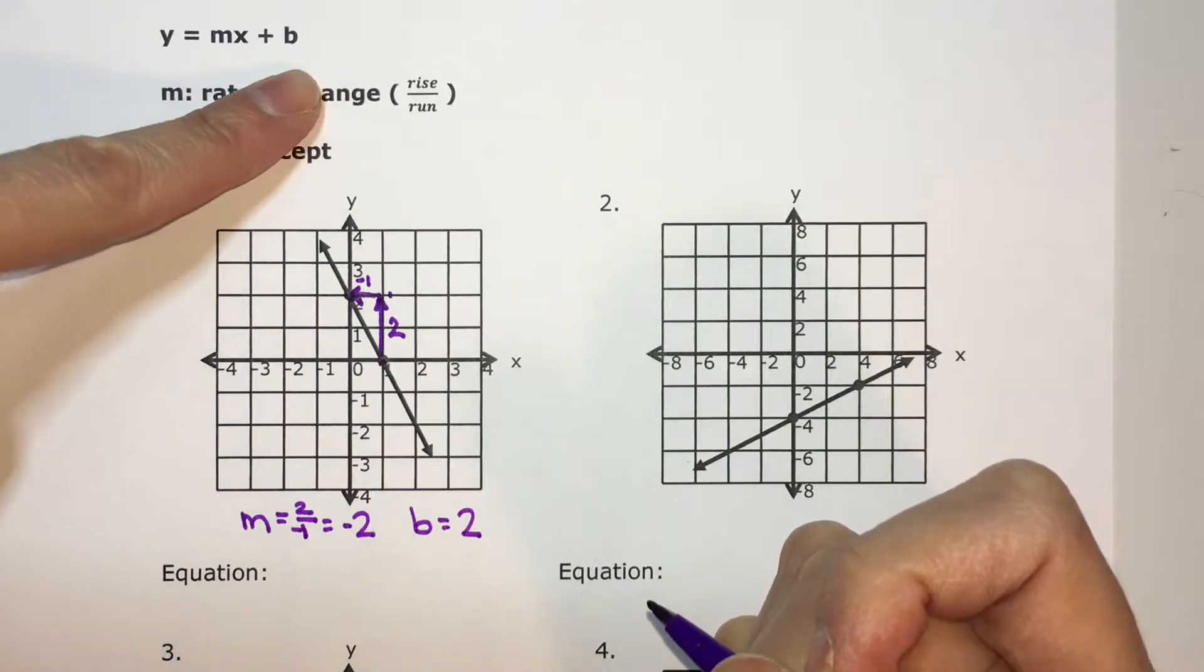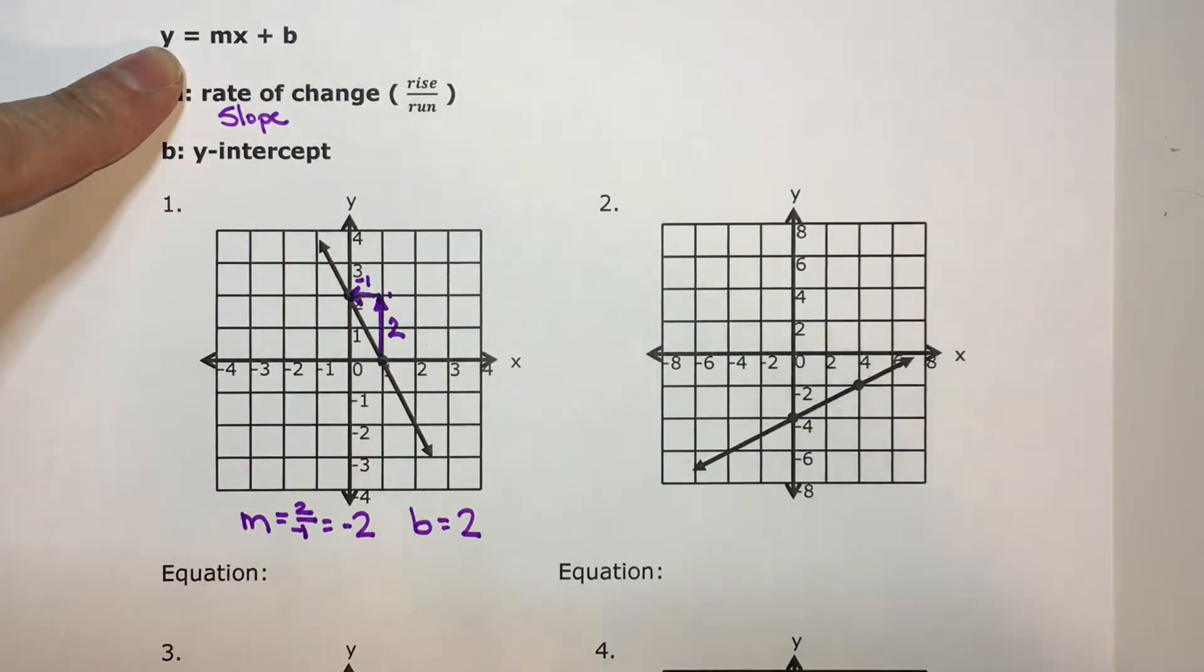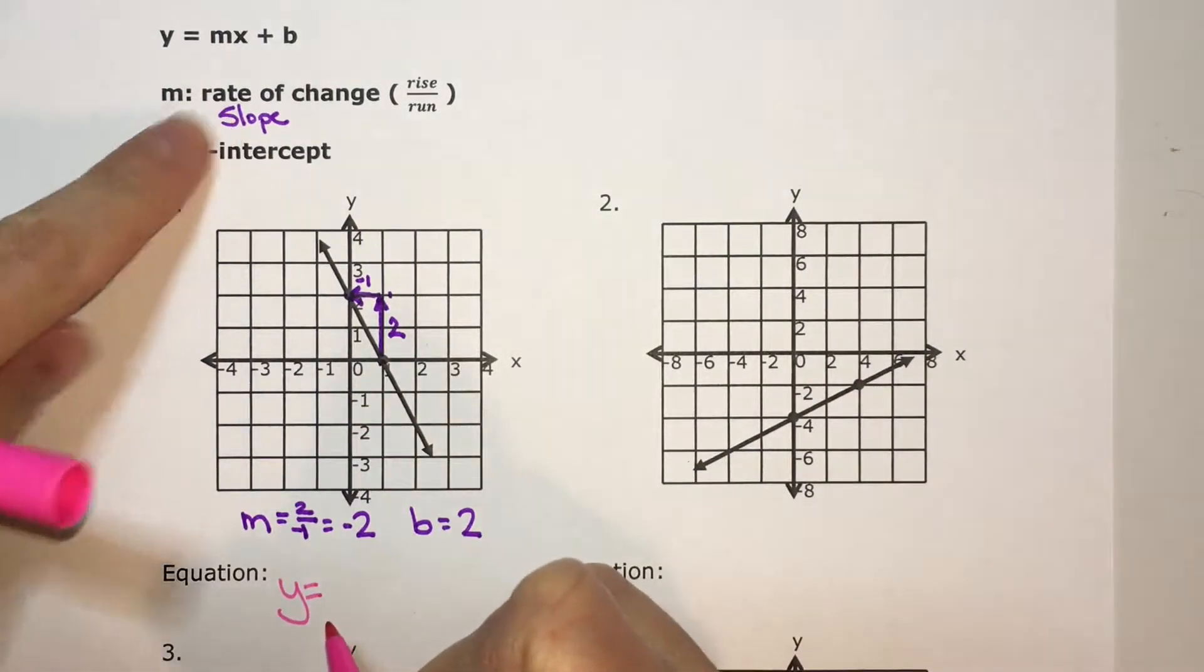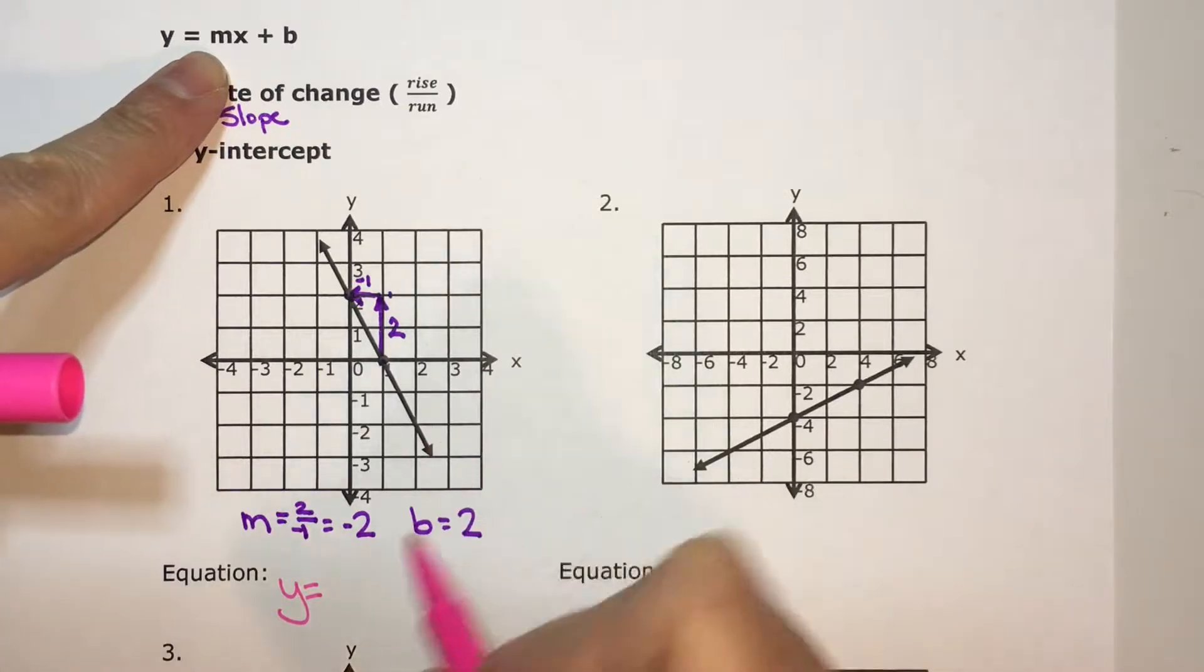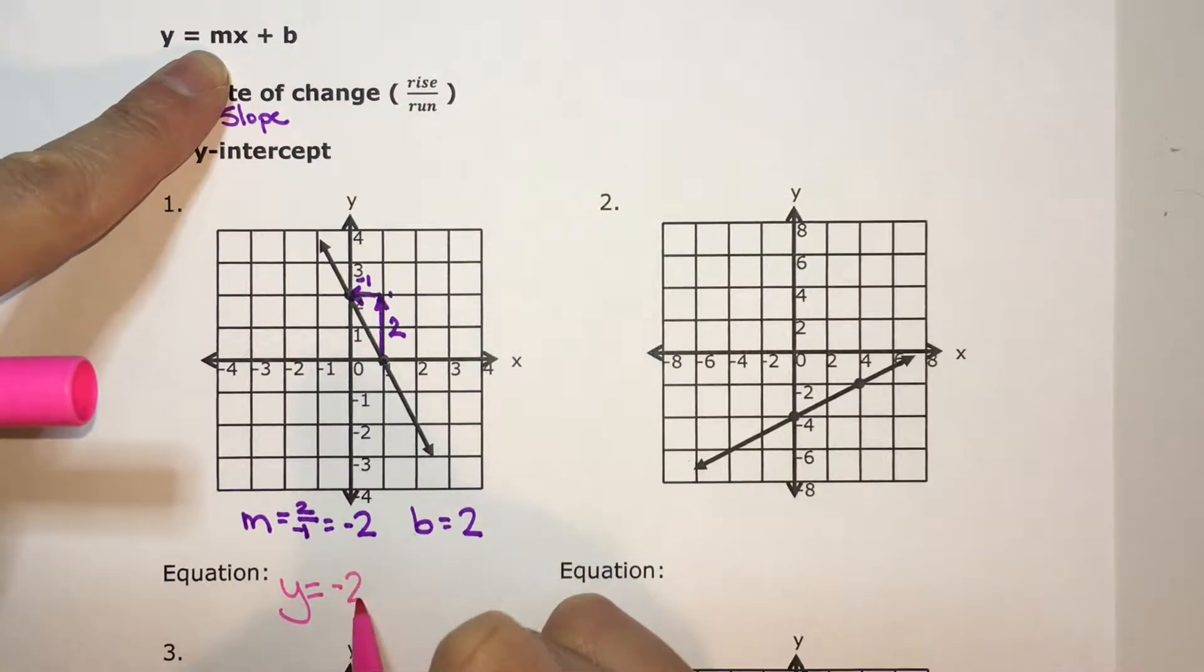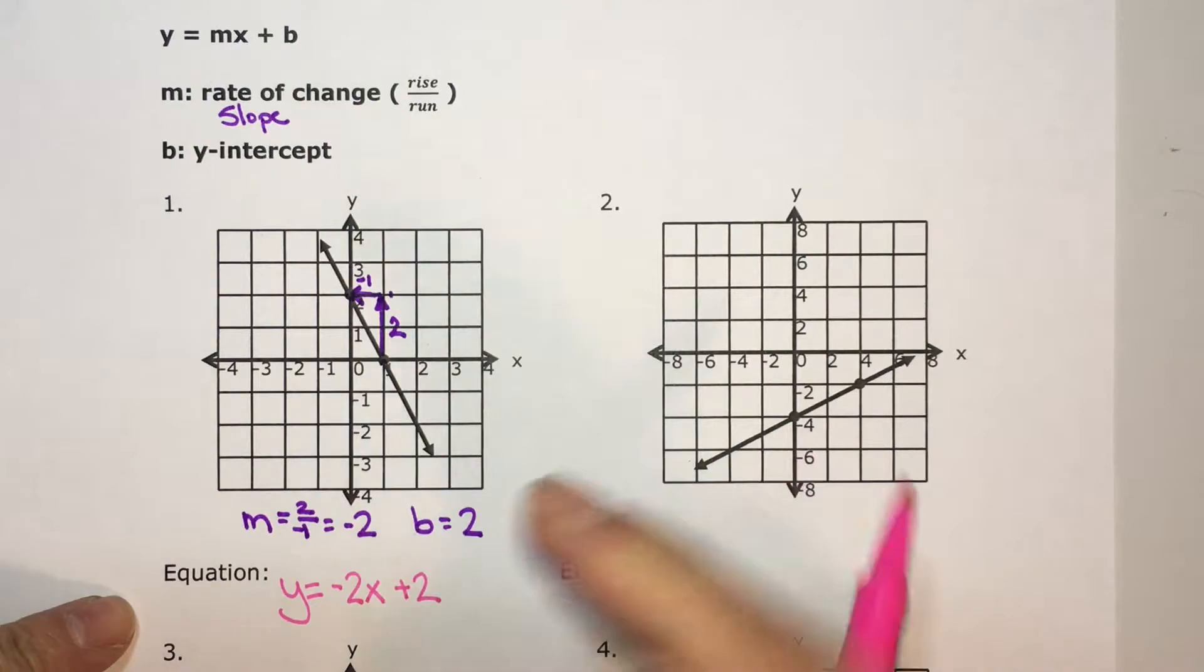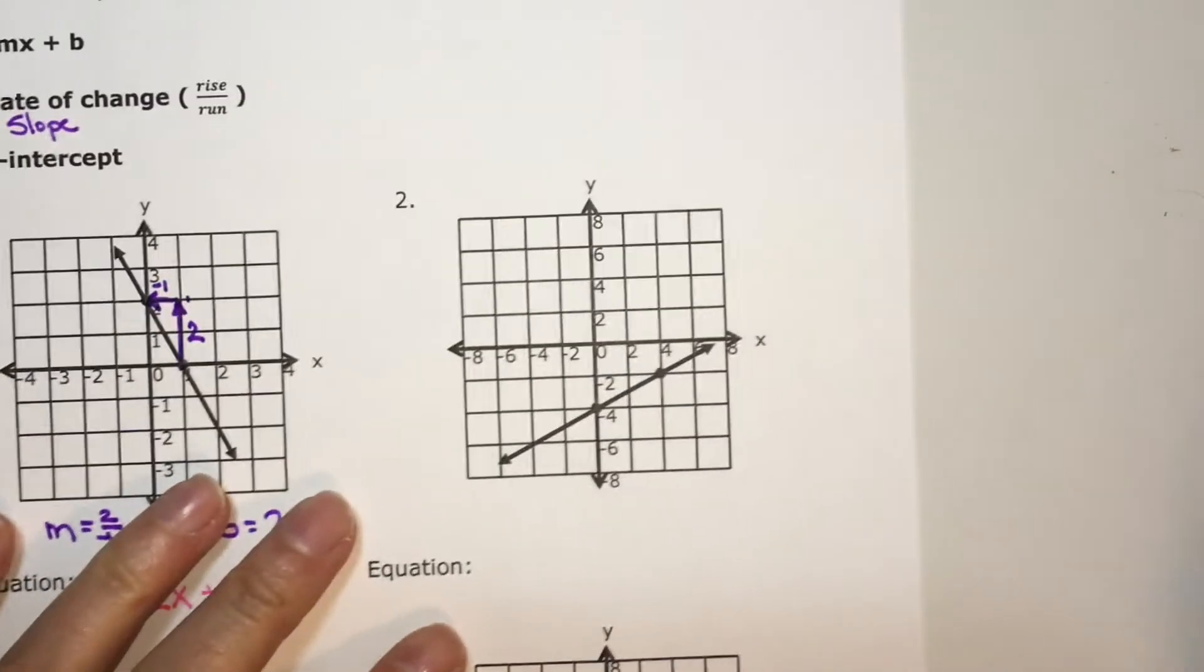So writing your equation in slope-intercept form, or y equals mx plus b form, x and y stay as the variables when you actually write the equation. So it's written as y equals m, which is our slope, which is negative two, x, so this is slope times x, plus the y-intercept, which is positive two, or b. I'm going to show you a couple more.